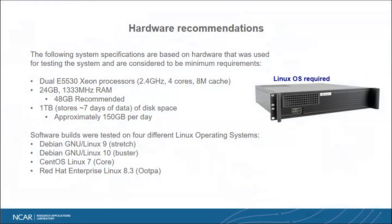The hardware I'm showing here as an example was what we used during the demonstration. We had our regular system but needed a backup in case of hardware failure, so we used an older, retired system — really the bare bones that could run this ROMEO-type system. It's a three-satellite system with two quad-core processors, so eight processing cores, and 24 gigabytes of memory, which is really pushing it — I would recommend more like 48 GB. We had one terabyte of data storage, which stores approximately seven days since we produce 150 gigabytes per day.